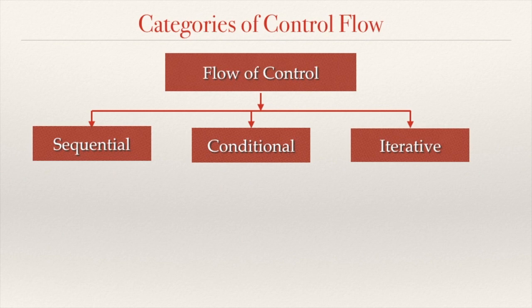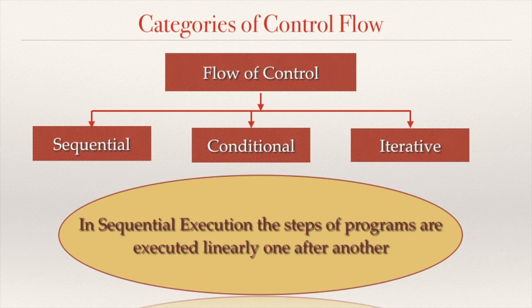The flow of execution may be categorized into three groups: sequential, conditional, and iterative. The sequential flow is the most basic flow of a Python program where the logic of the program flows from top to bottom in a linear or sequential manner. That is, to execute any nth step, all the n-1 steps before it have to be executed.